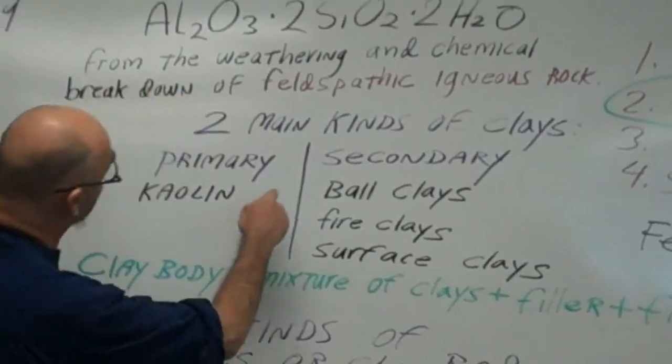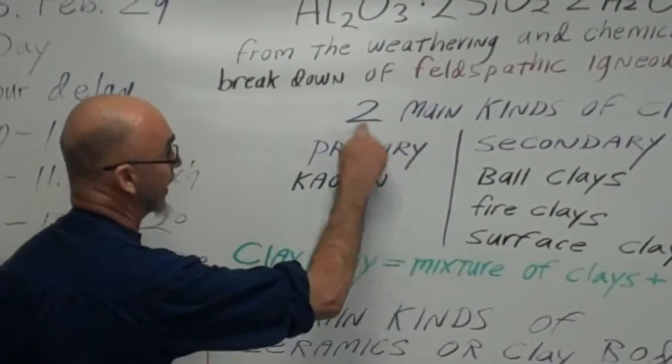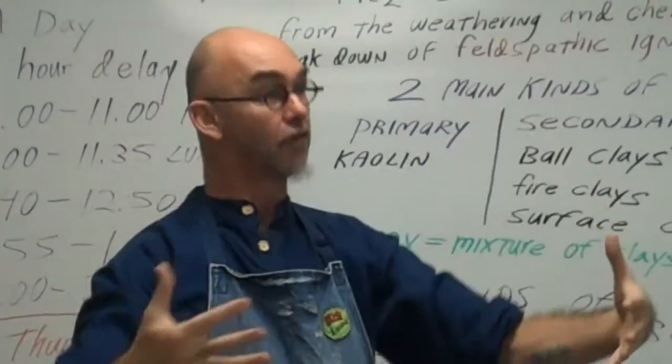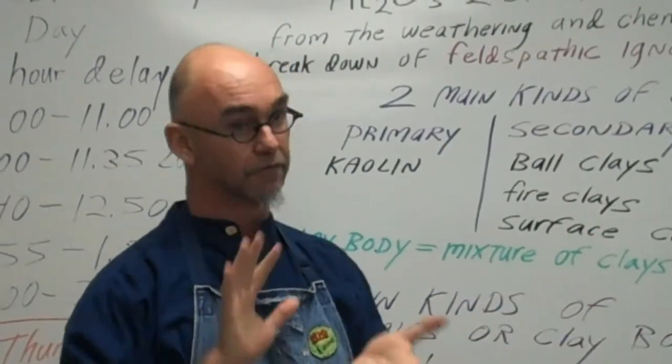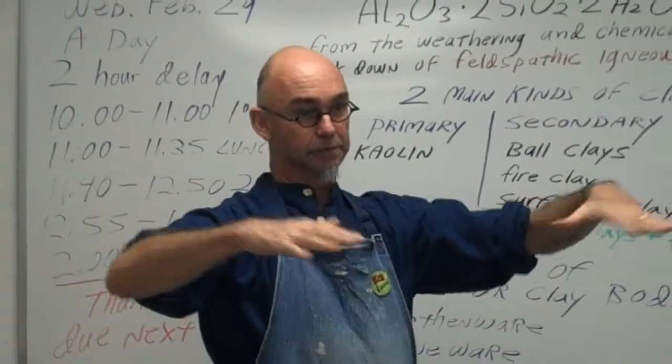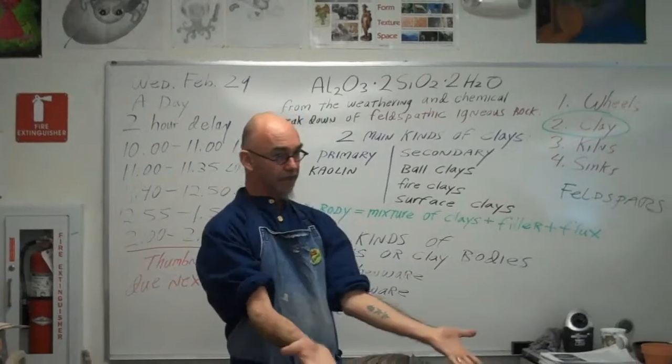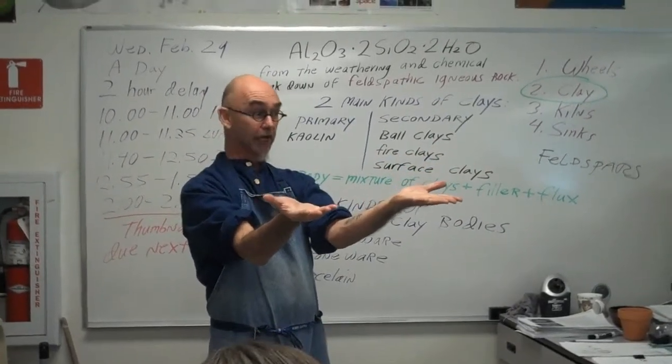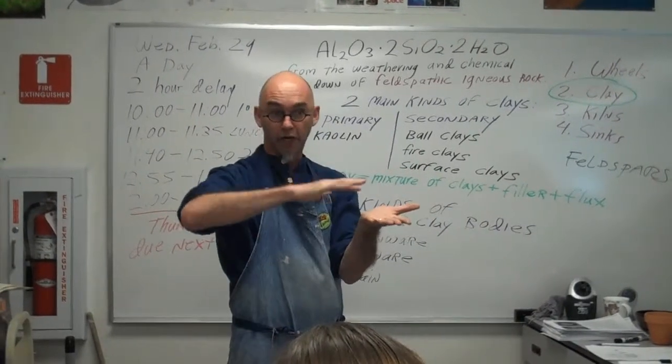Primary clay is clay that lives where it was formed. Like it's right under the volcano where it was formed, or if it was formed from lava that the volcano shot out, it's right there. It's never been moved. So it's buried under tons of other rock. The rock is worn away. The clay is at the surface. Sometimes it's buried.